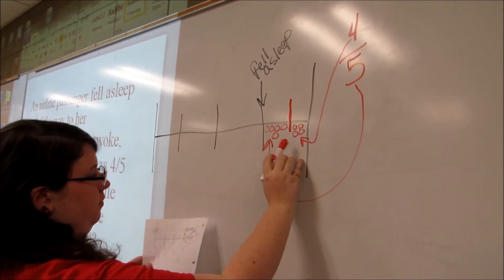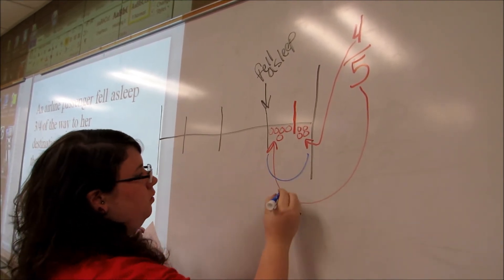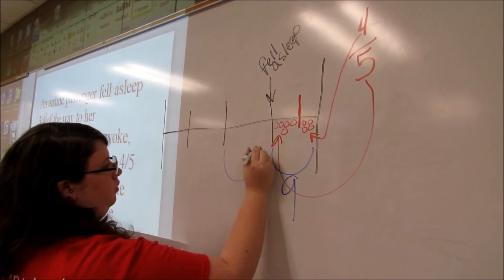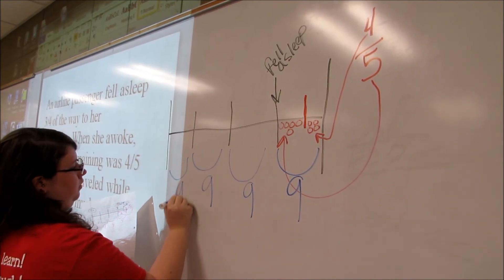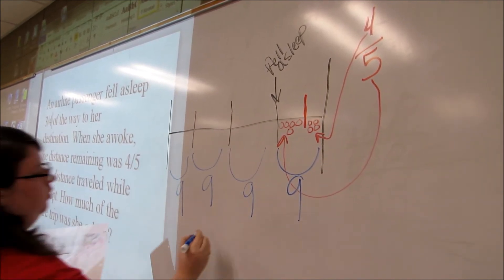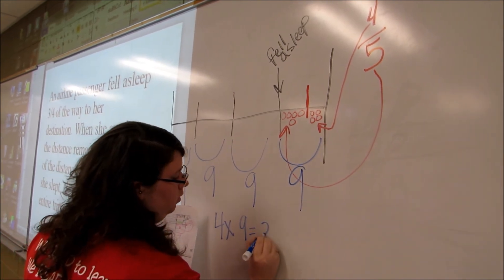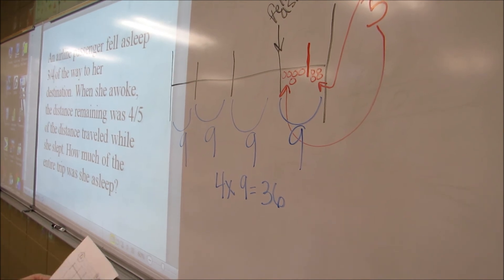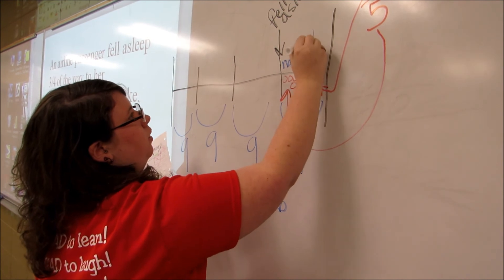Together with the five and the four, we've got nine parts. If that's nine parts, this is going to be nine, this is going to be nine, and this is going to be nine. Four times nine is going to be 36, and she was asleep this much because this red line is where she woke up.